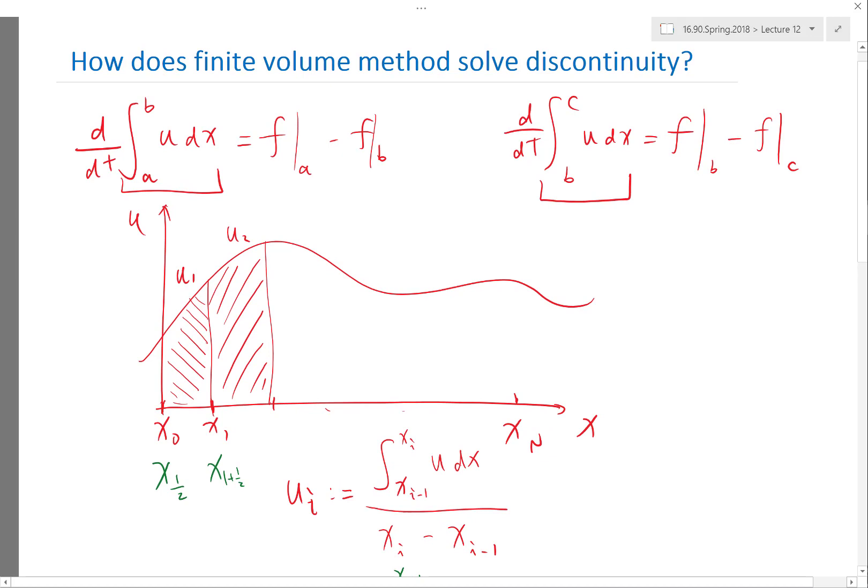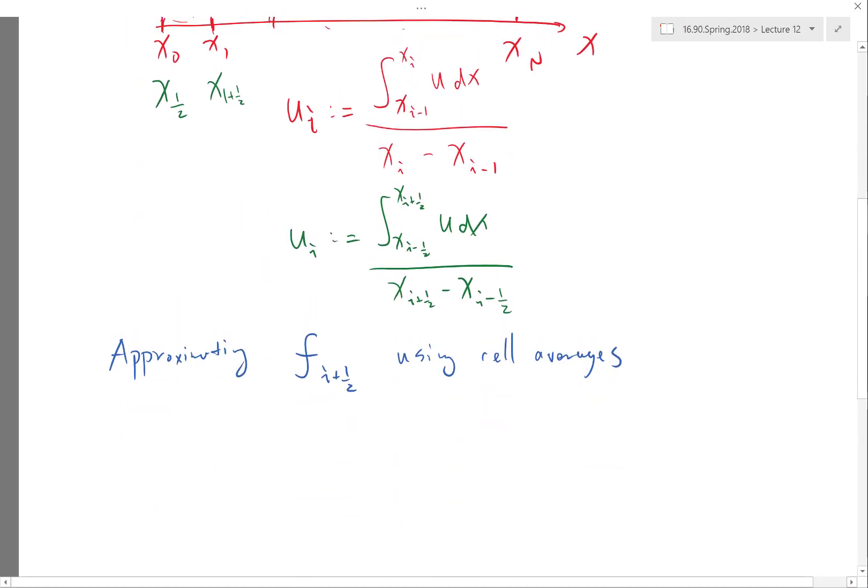I mean, this integral form, there is no approximation. Defining the unknowns as the cell average, there is no approximation. This is actually the only approximation you incur in finite volume. All the numerical error you make is in the act of approximating the interface flux using only the cell averaged values.